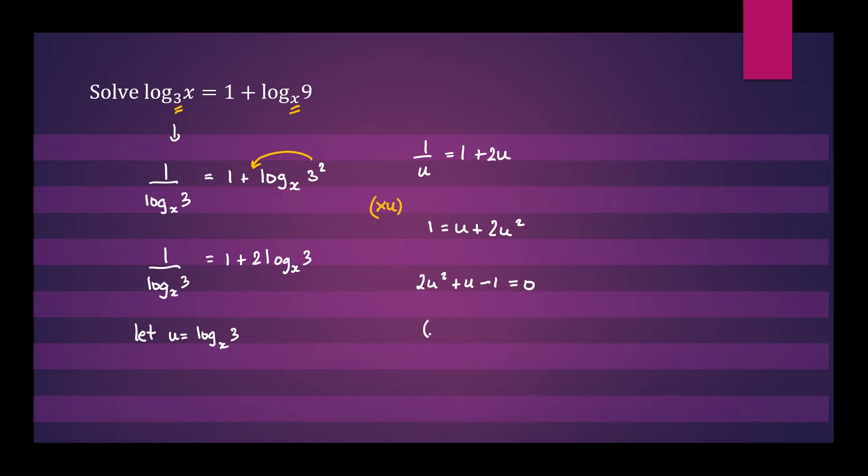When you factorize this equation, you'll get 2u minus 1, u plus 1 equals 0. Therefore, u will equal a half and negative 1.